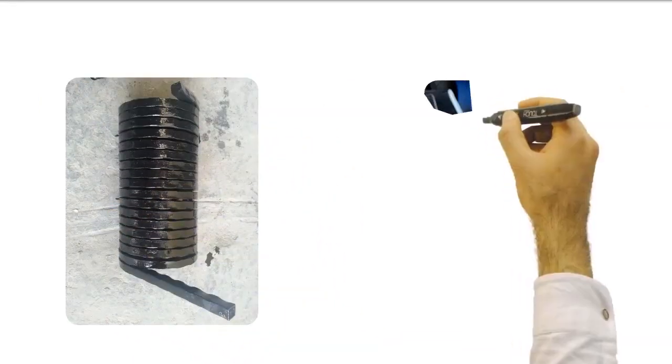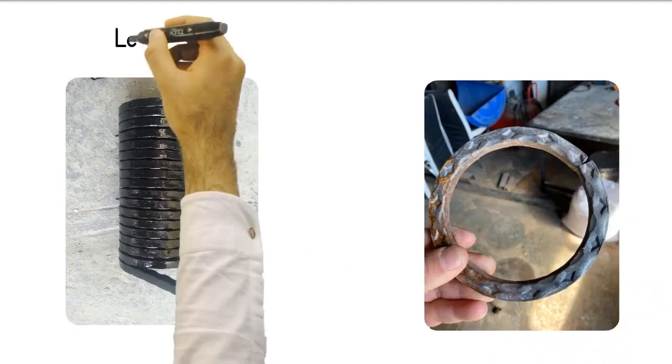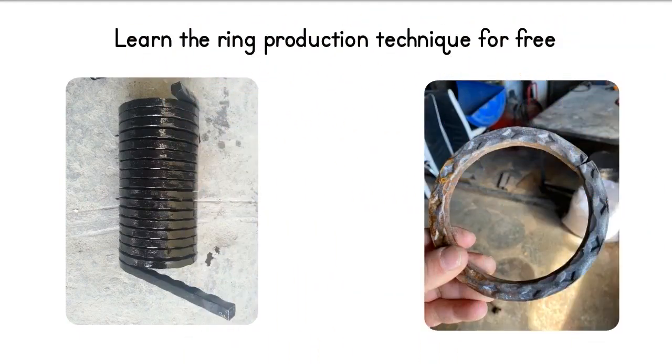You can also use the wrought iron C and S bending machine for ring production. This tip will be shared with you free of charge.